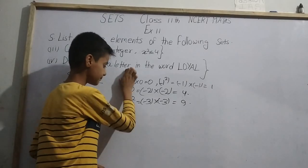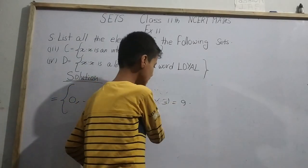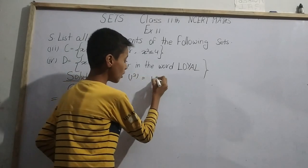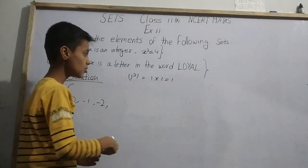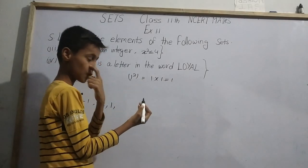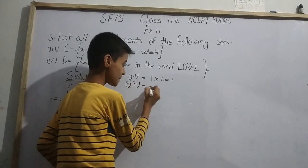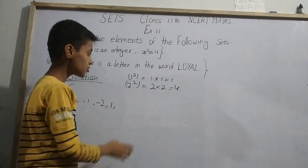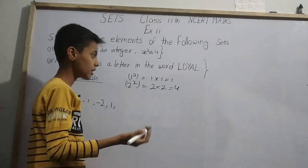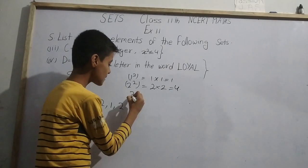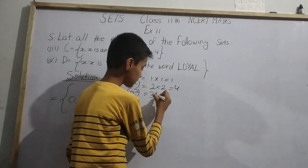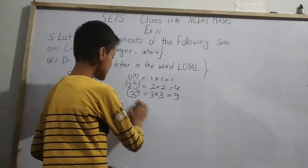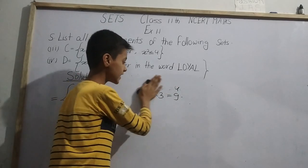Now let us solve for positive integers. Starting from 1: 1² = 1 × 1 = 1, which is less than 4. So we can write 1. Next, 2² = 2 × 2 = 4, which equals 4, and since x² can be equal to 4, we include 2. Next, 3² = 3 × 3 = 9, which is greater than 4, so we cannot take 3. We will stop our calculation here.